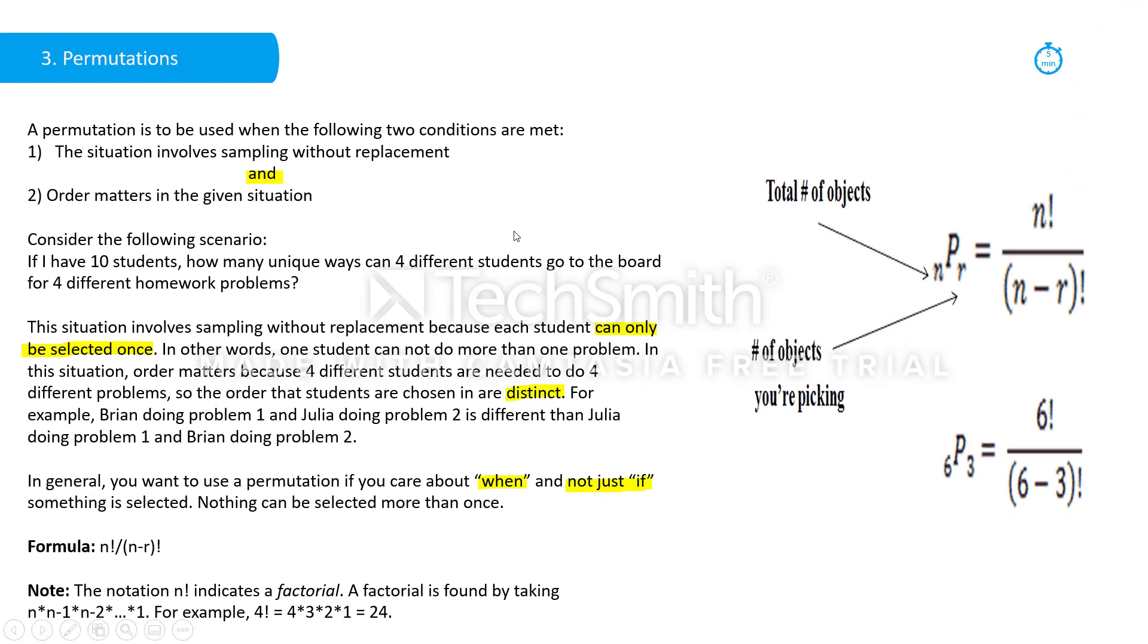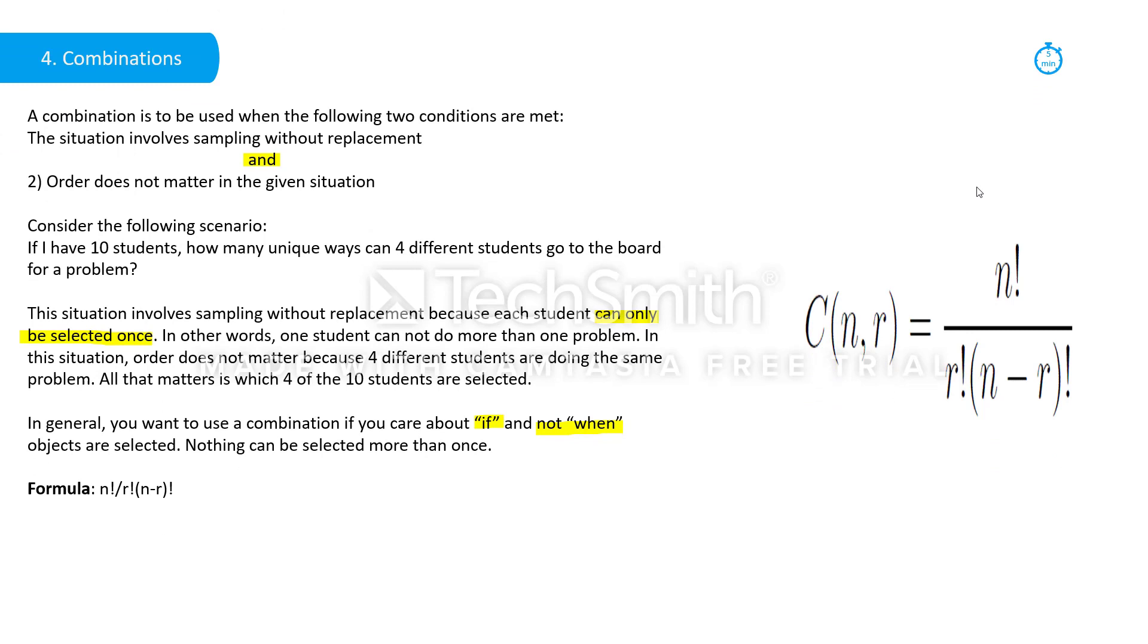Another method we could use is a permutation. And this is a situation that involves sampling without replacement, so a choice cannot be chosen again, and order matters in that situation. As we can see over here to the right, this is the formula for a permutation: n factorial over n minus r factorial.